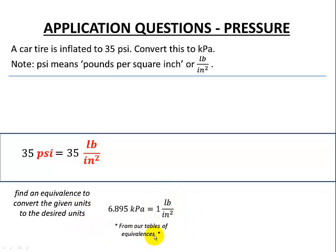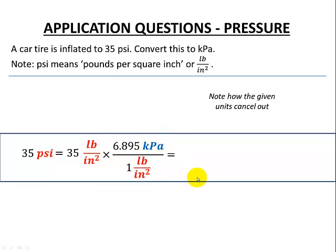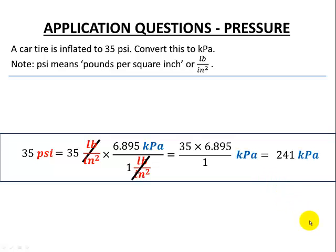From the table of equivalences, there are 6.895 kilopascals in one pound per square inch. We multiply our given value by this unit ratio, placing pounds per square inch in the denominator so they cancel, and kilopascals in the numerator. The pounds per square inch cancel out, we're left with kilopascals, and 35 × 6.895 gives us 241 kilopascals.